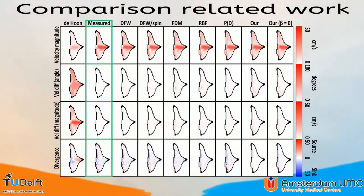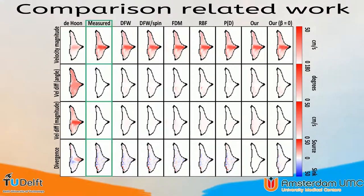We also conducted a comparison with related work, where we compare the velocity difference in angle and magnitude, as well as the divergence present in the data. We compare against our previous method, divergence-free wavelets (DFW) with and without cycle spinning, the finite difference method (FDM), and radial basis functions (RBF). For completeness, we also compare with one iteration of our pressure solve step, as well as our approach without the divergence term. As shown, none of the methods can eliminate all divergence except our approach. Moreover, the difference with the measured data is comparable for all approaches except our previous approach, indicating that all these approaches remain close to the measurements.